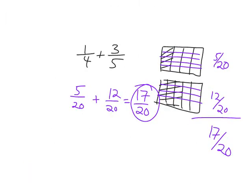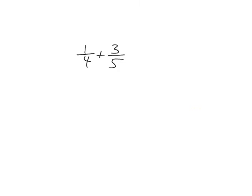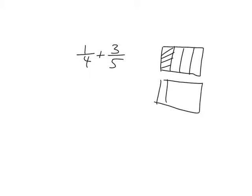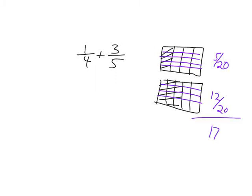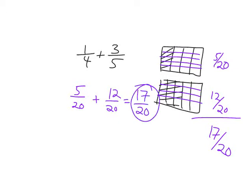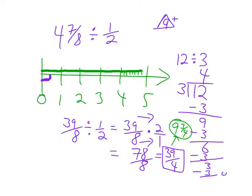Let's do one-quarter plus three-fifths. You could do this with chocolate bars: there's a quarter of a chocolate bar, and here's three-fifths of a chocolate bar. Quarters and fifths aren't the same size, so you chop the top one into four slices and the other into five slices that way — now everything's in twenties. You count up the little chunks and you've got 17-twentieths. You can actually do fractions without numbers — all you need is a chocolate bar or two.